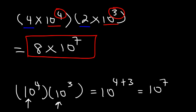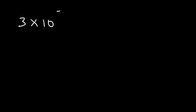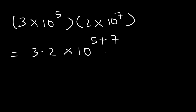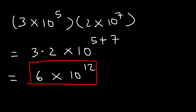Don't forget to add the exponents. Now let's try another example. Let's multiply 3 times 10 to the 5 by 2 times 10 to the 7. This is going to equal 3 times 2 multiplied by 10 raised to the 5 plus 7. 3 times 2 is 6, and 5 plus 7 is 12. So the answer is 6 times 10 to the 12.